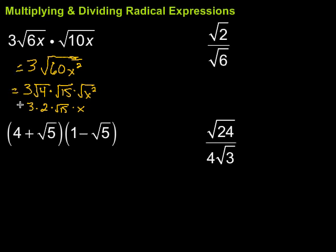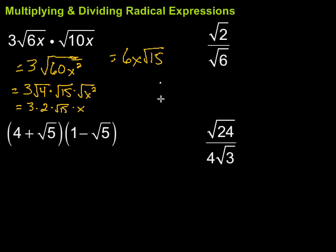Then I clean up: I've got 3 times 2 times x — all those things outside the square root — which gives 6x, and inside the square root I have the square root of 15. So the answer is 6x times the square root of 15.